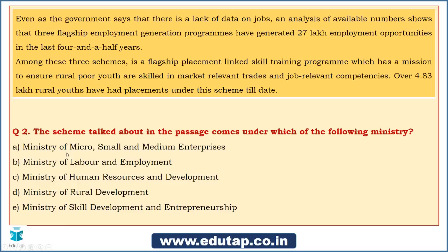The next question concerns the implementing ministry: which ministry is the scheme that is being talked about in the passage under? We now know the scheme is Deen Dayal Upadhyaya Grameen Kaushalya Yojana — so tell me under which ministry it operates. Dhruv says Rural Development Ministry. Jagannath says Ministry of Labour and Employment. Uday Kumar picks E, suggesting Ministry of Skill Development because of the 'placement-linked skill training' keyword. Swapnil says D — Ministry of Rural Development. Tanuja says C — Human Resource and Development.